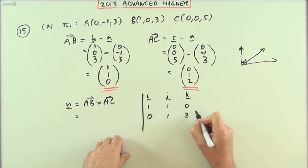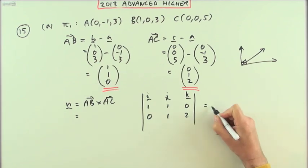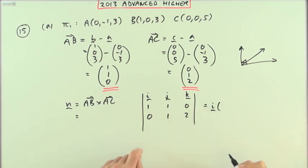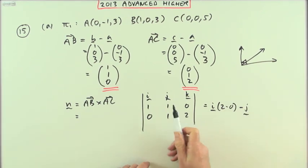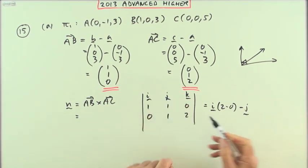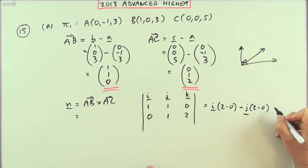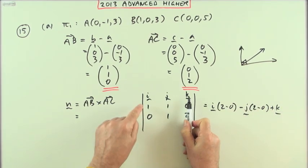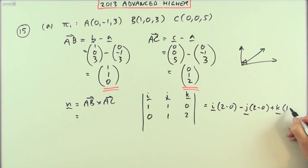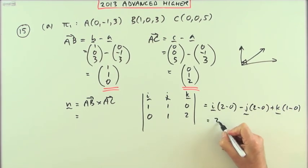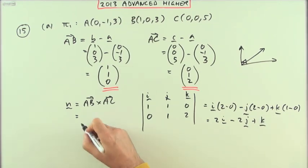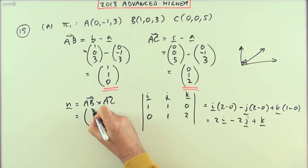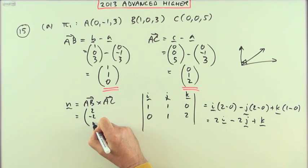For the i component, I would have two take away zero. Minus j—for the j component I would have two take away zero. And for the k I would have one take away zero. So that's going to give me 2i minus 2j plus k. In column vector form: (2,-2,1). You can't get any nicer than that—I can't have fewer negatives and I can't cancel it down any further.